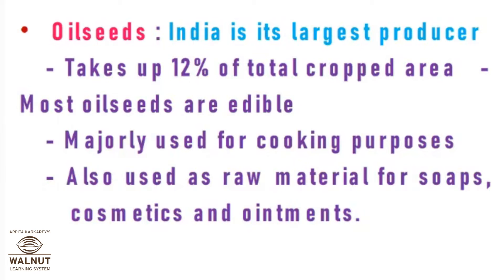Oilseeds take up 12% of the total cropped area. Most of them are edible and used for cooking purposes. Examples include sunflower oil and soya bean oil. If you go towards the south, coconut oil is also used for cooking purposes. Most oilseeds are edible — we can use them for cooking.